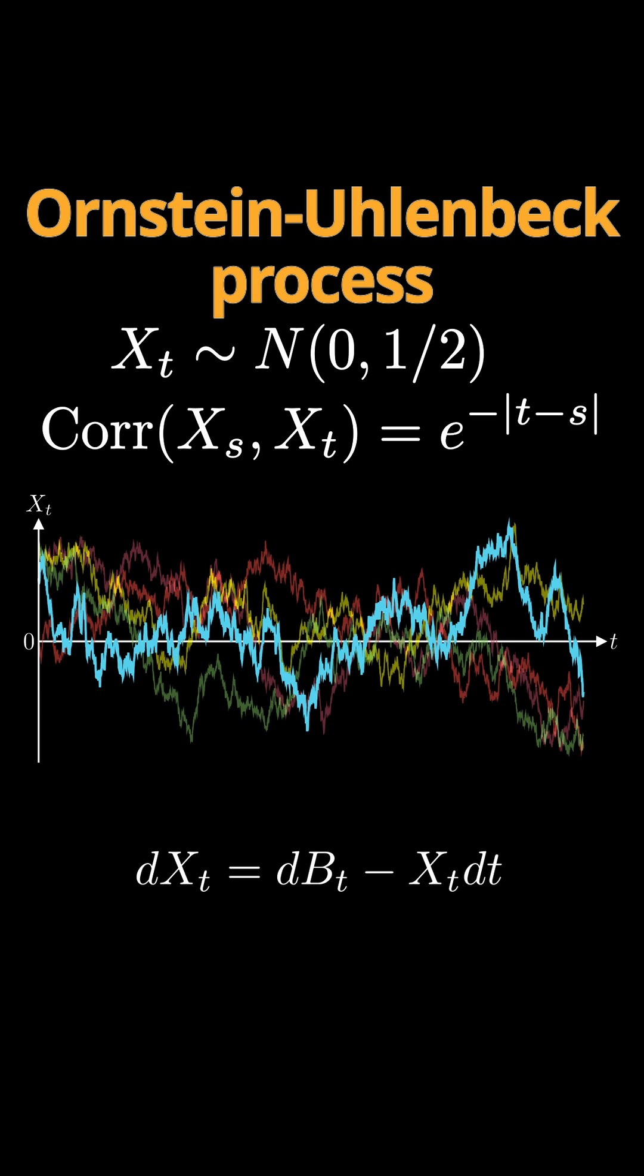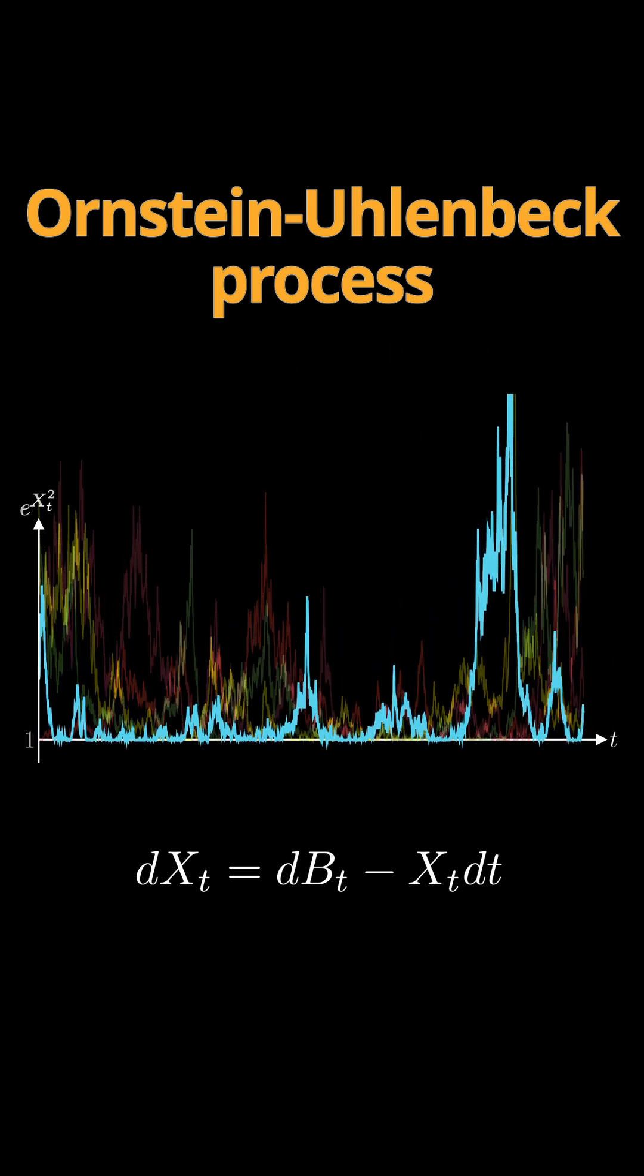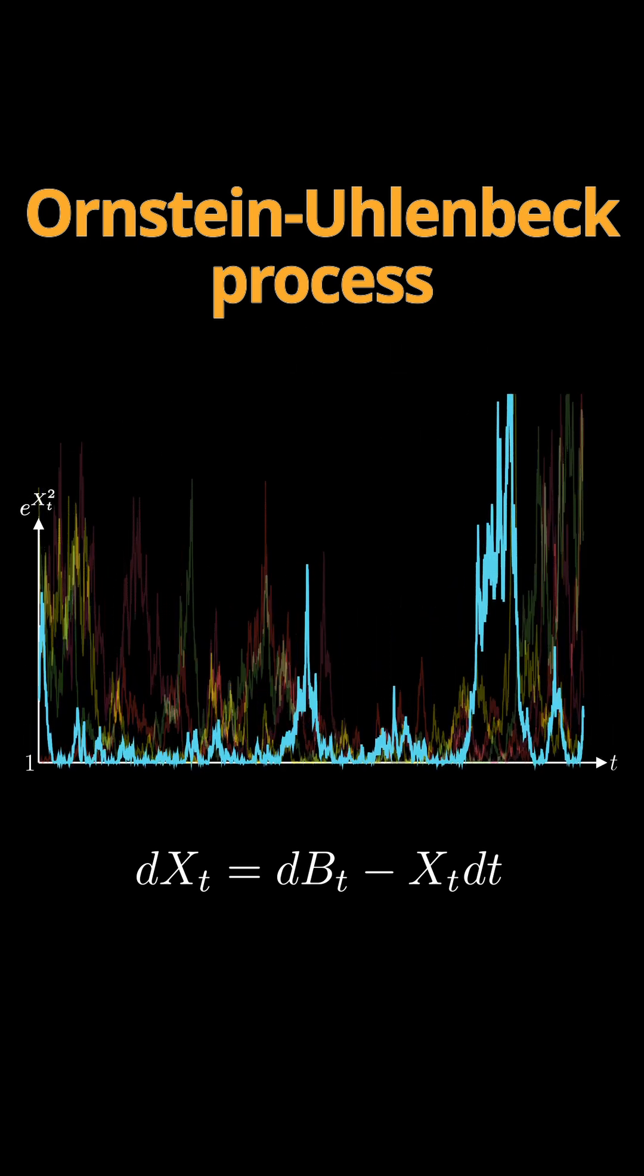Now set y equal to the exponential of x squared. Again, this is a stationary process. Stationary Markov process, its distribution is the same at every point in time. And in fact, the joint distribution is invariant under translating through time.